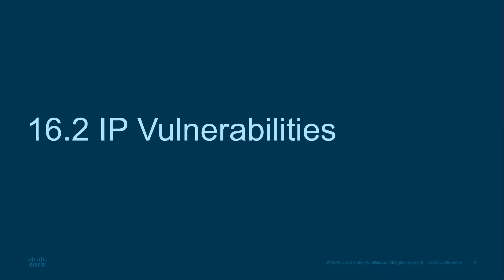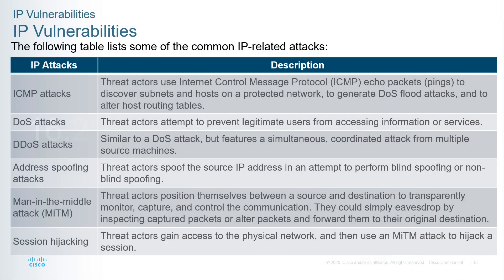Moving on, let's talk about IP vulnerabilities. Common vulnerabilities include ICMP attacks, DoS attacks, DDoS attacks, spoofing, man-in-the-middle, and session hijacking. An ICMP attack is where a threat actor uses ICMP echo packets (ping) to discover subnets and generate DDoS flood attacks. A DoS attack is when a threat actor attempts to prevent legitimate users from accessing a resource by consuming its resources — essentially sending tons of data to a machine to bring it to a crawl.